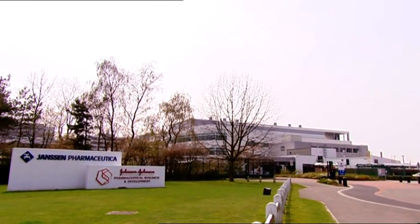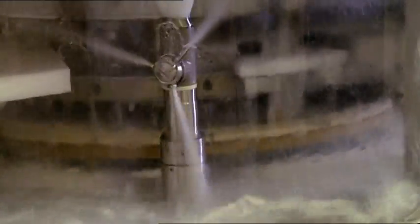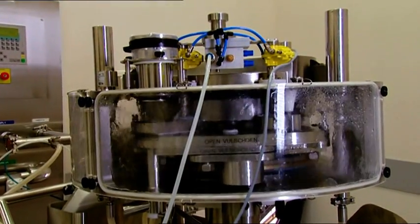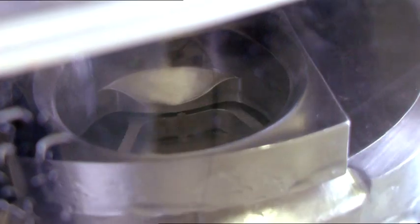J&J PRD, the Pharmaceutical Research and Development Division of the J&J Group, has recently invested in a module tablet press. The machine has been installed in their development and clinical trial production plant in Bierce, Belgium.